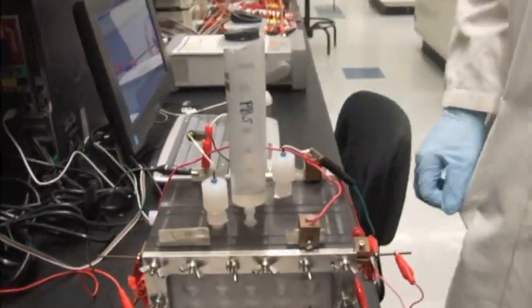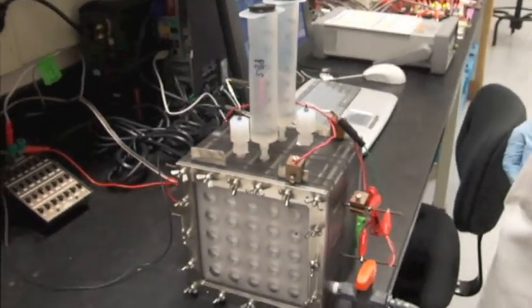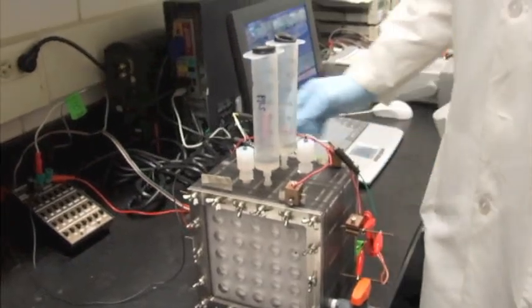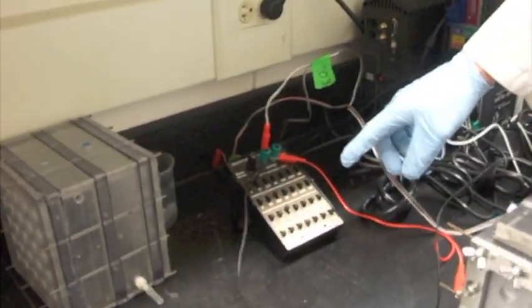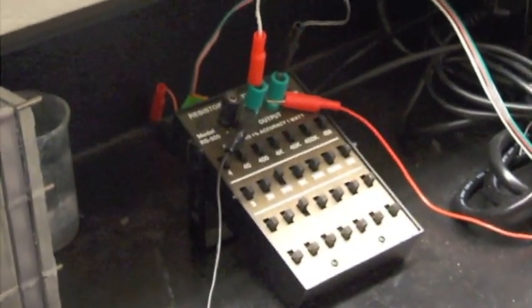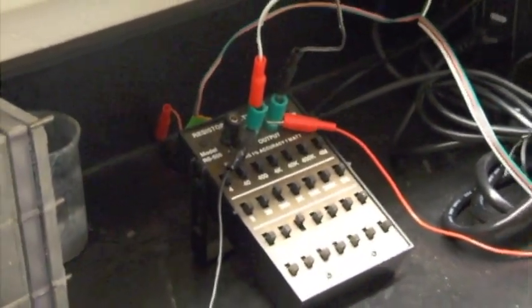The cathodes are also wired together so they function as a single unit. We have right now a resistor box setting a resistance between the anode and cathode, an external resistance of 500 ohms.